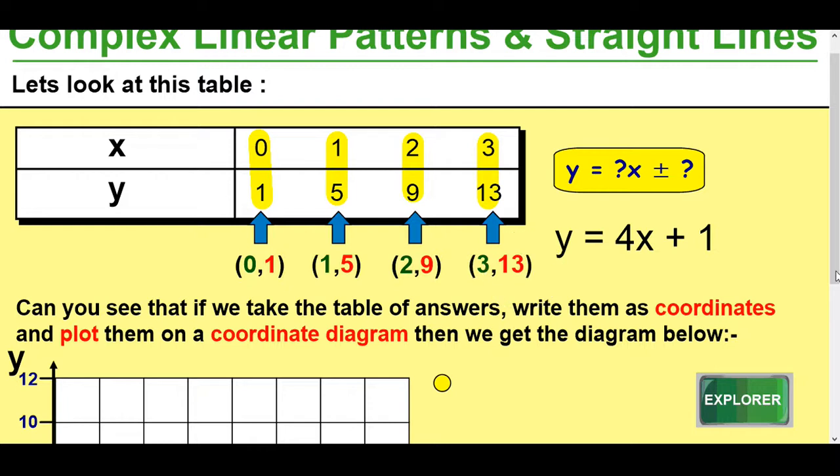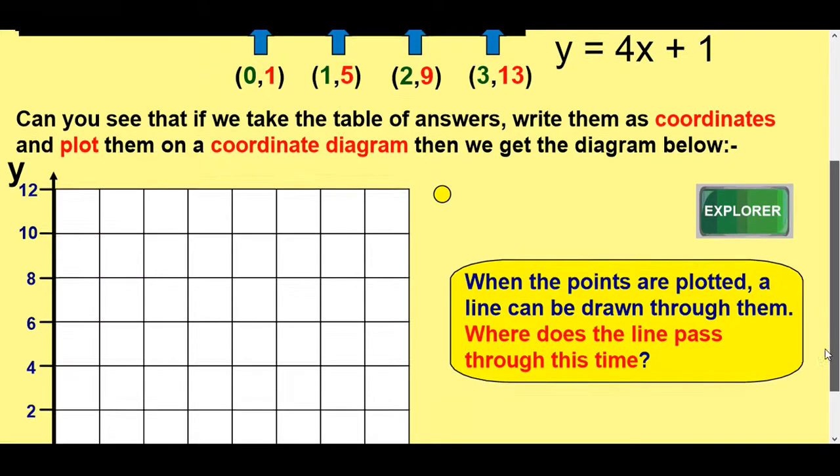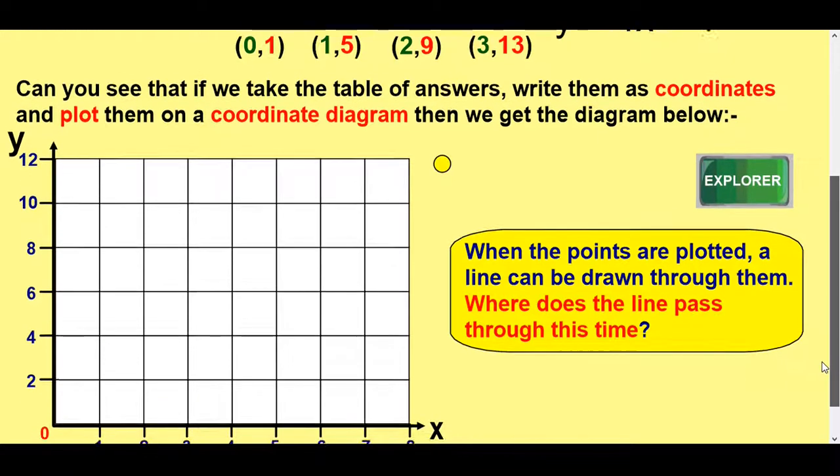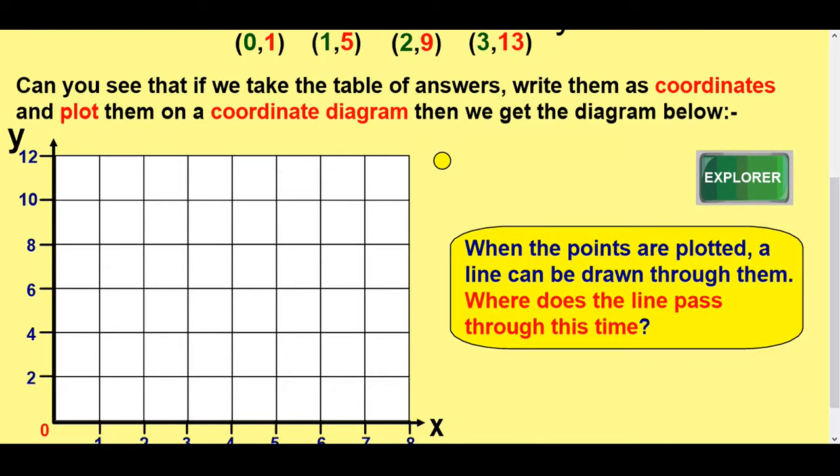I've got a coordinate grid going along to 8 and up to 12, and let's have a look at them up there. So, I've still got them on the screen. Remember, the first number is how far you go along, second number up or down. In this case, just up.